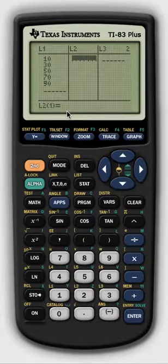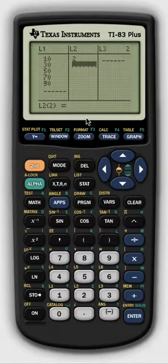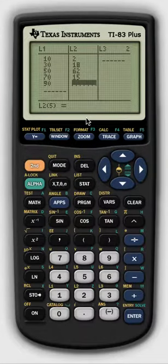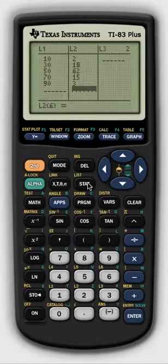Then we want to move over to list number two. So you can use the arrow pad again and move over to list two and we're going to put in a frequency of 2 for 10, 18 for 30, 62 for 50, 15 for 70, and 3 for 90. And now we are able to use this data to calculate some of our statistical properties.